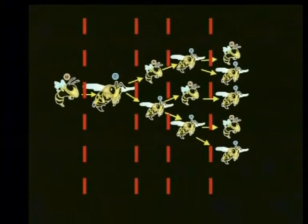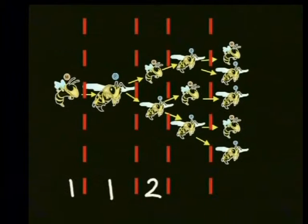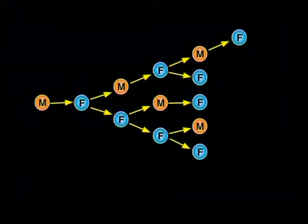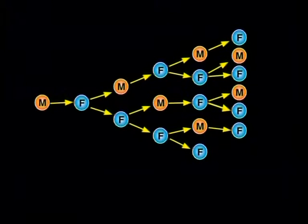Now this gets interesting in a mathematical way. Look at the total number of bees in each generation. If we write down this number sequence, it will be: one, then another one, the third number is two, the fourth number in the sequence is three, and the fifth number is five. Can you see from the number sequence what the next number will be? In other words, what will come after one, one, two, three, five? We are going to make another generation of the diagram to help us. In the sixth generation of bees, there are eight bees.